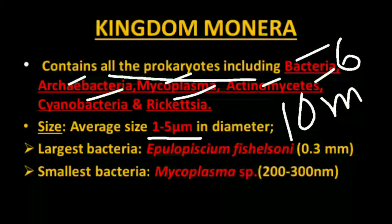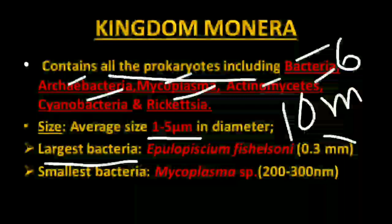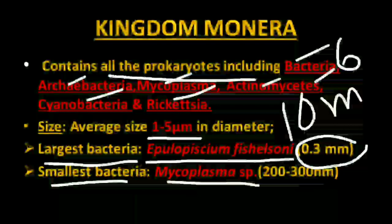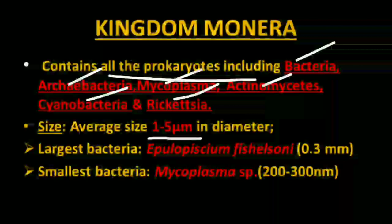The largest bacterium is 0.3 millimeters in size — that is Epulopiscium fichelsoni. The smallest bacterium is mycoplasma, which is 200 to 300 nanometers in size. You have to memorize these names along with their sizes.